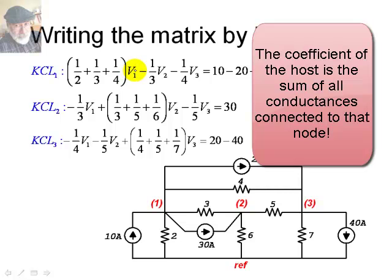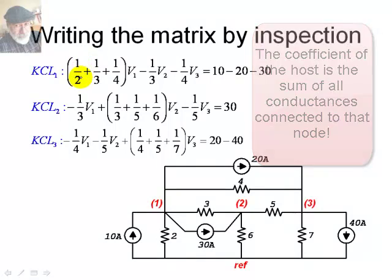So, the coefficient of the host of node 1 will be the inverse of 2 plus the inverse of 3 plus the inverse of 4. Observe, inverse of 2. Those three conductances added together give me the coefficient of the host of KCL1.